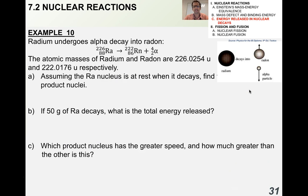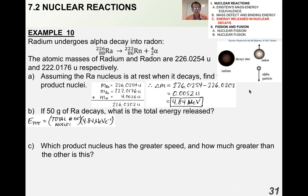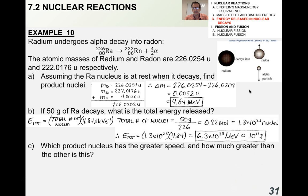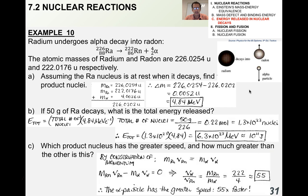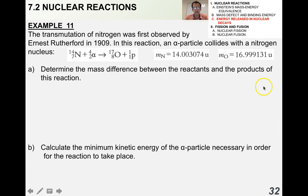Here's a past paper question from around 2010: radium undergoes alpha decay; the atomic masses of radium and radon are given. Assuming the radium nucleus is at rest, find the product nuclei. The total energy release is about 10 to the 11 joules. Which product nucleus has the greater speed and how much greater? The alpha particle has the greater speed — about 55 times faster — because of the difference in masses, using conservation of momentum. We can spend more class time on part C if needed.